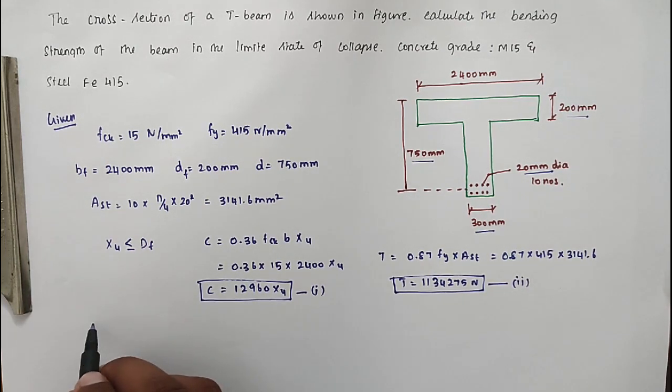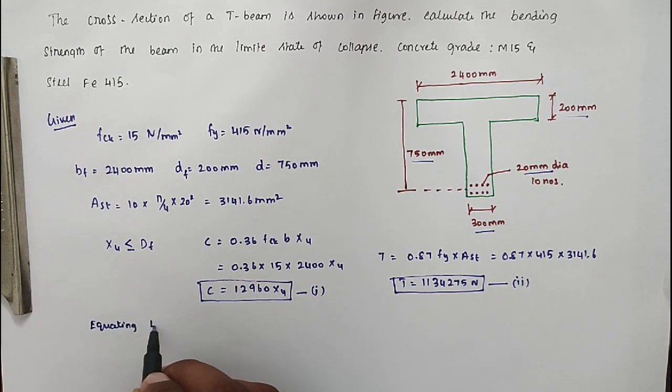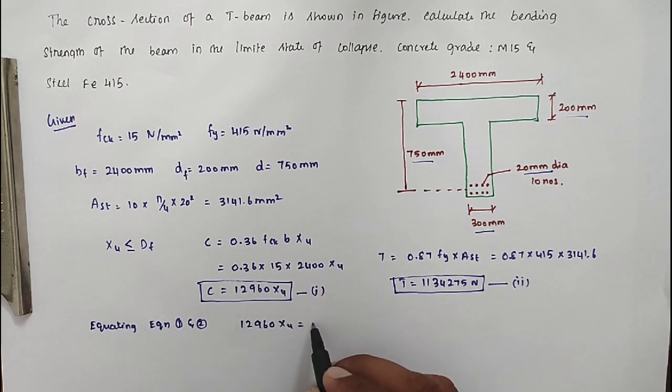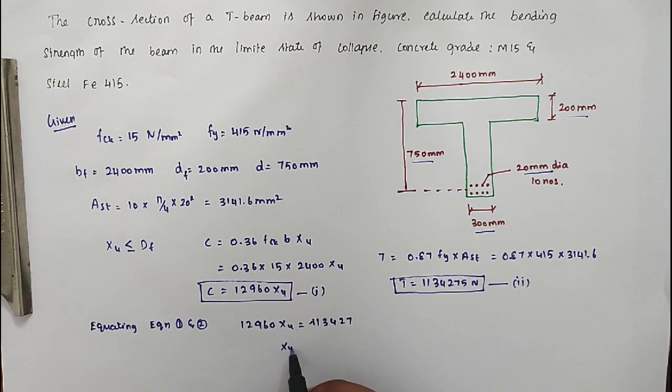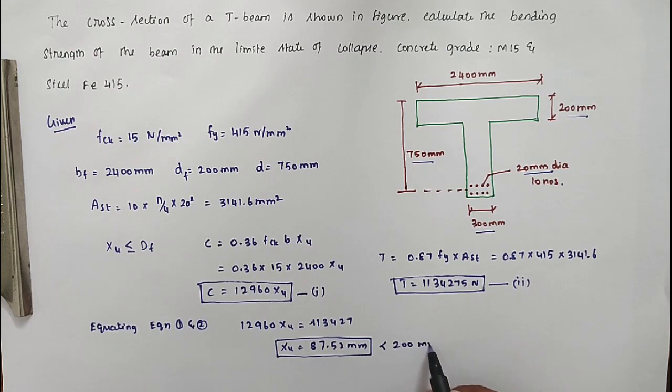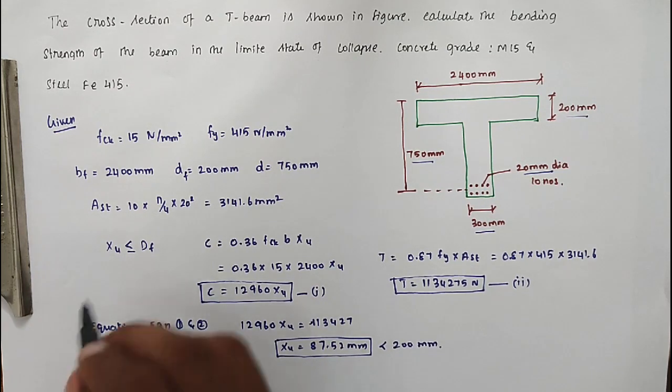Now equating 1 and 2: 12960 XU equal to 1134275 N. XU equal to 87.52mm. This is less than 200mm, so our assumption is correct.